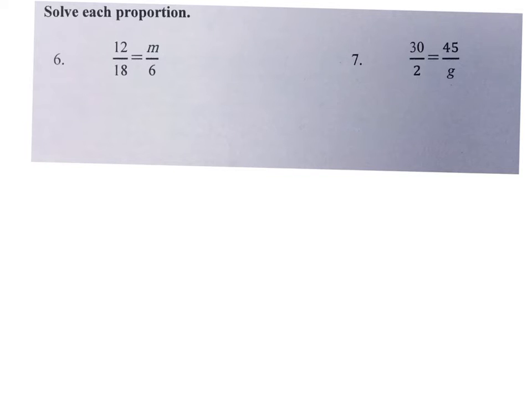Okay, this one you can use scale factor. So you just look and say, hey, it's getting smaller, and I'm dividing by 3. So that means I will divide by 3 up here, and M equals 4. This one, there is no scale factor from 30 to 45, but I can simplify this to 15 over 1. And then there is a scale factor of times 3. And 1 times 3, G equals 3.